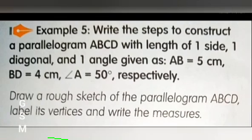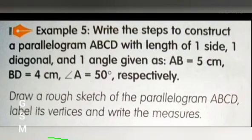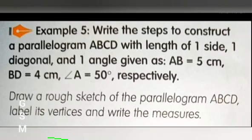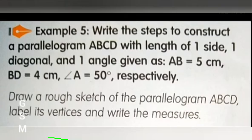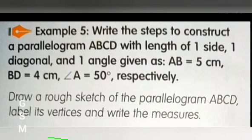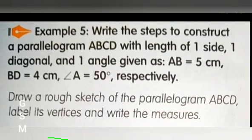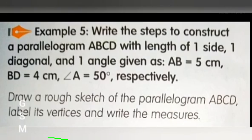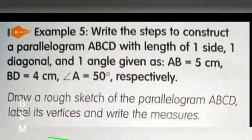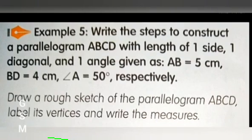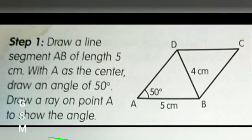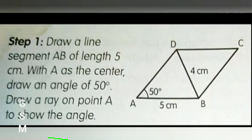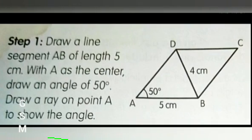Next, let us see an example. Write the steps to construct a parallelogram ABCD with the length of one side, one diagonal, and one angle given: AB equals 5 cm, BD equals 4 cm, and angle A equals 50 degrees. Draw a rough sketch of the parallelogram ABCD, label its vertices and write the measures. Step 1: Draw a line segment AB of length 5 cm. With A as center, draw an angle of 50 degrees and draw a ray on point A to show the angle.